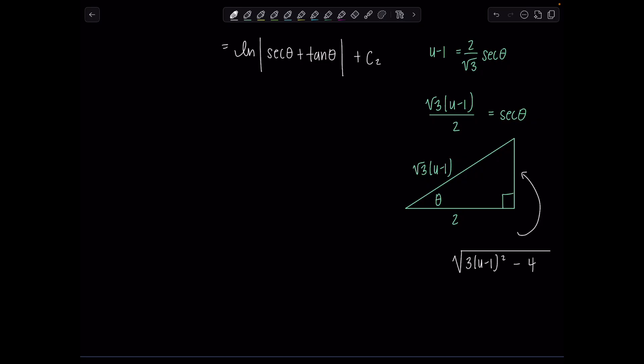Putting this all together, now we have natural log absolute value. Secant theta is rad 3 times u minus 1 over 2 plus tangent theta is ratio of opposite side over the adjacent side. So then we have square root 3 times u minus 1 squared minus 4 over 2 plus c2.